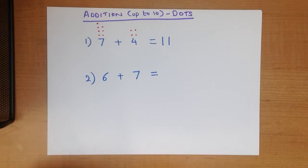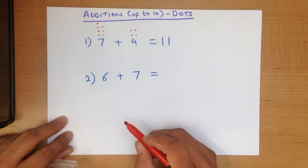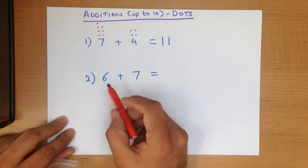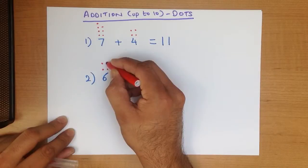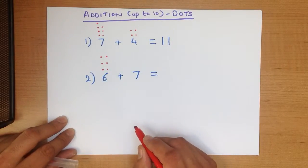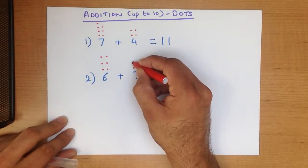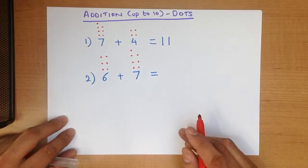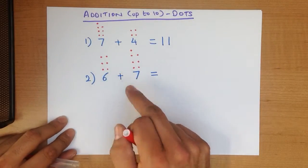Now again, using the dots method, we write down above each of the numbers how many dots there are. So with this one, 6, we write down 6 dots: 1, 2, 3, 4, 5, 6. Above this number, we write down 7 dots: 1, 2, 3, 4, 5, 6, 7. 6 plus 7, 6 dots plus 7 dots.